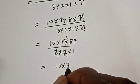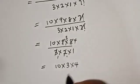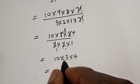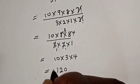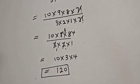10 times 3 times 4, which is equal to 10 times 3 is 30, times 4 is 120. And this is our final answer.